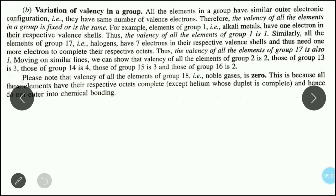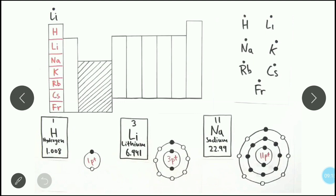Now let's look at valency in groups. In groups, valency remains the same. Why does it remain the same? Let's understand it. I am taking the first group elements as an example.